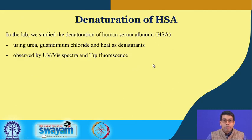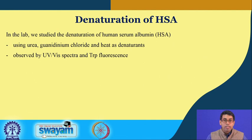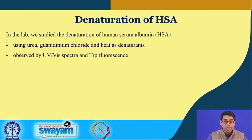In the lab component of this week, we looked at denaturation of human serum albumin (HSA). We followed this particular protein and looked at its denaturation by several methods. We used urea and guanidinium chloride as two chemical denaturants, and we also used heat to denature this protein. We observed using two different techniques: UV-visible spectra and tryptophan fluorescence. I will go through the heat denaturation of HSA and explain how to look at the data and get meaningful information from the experiment.